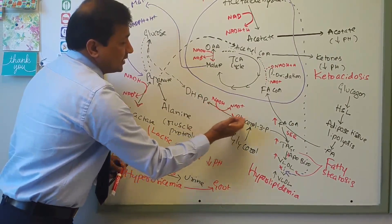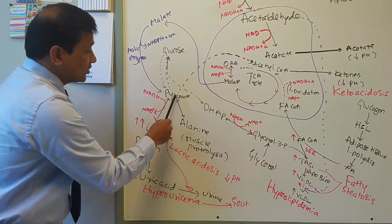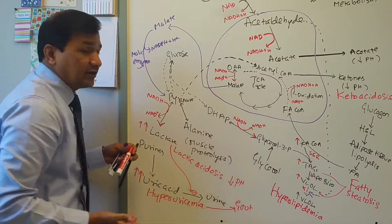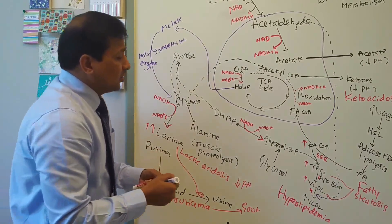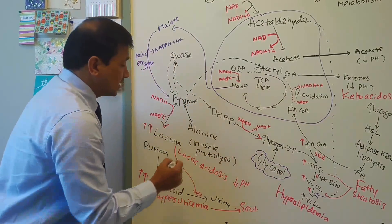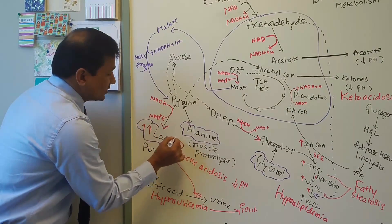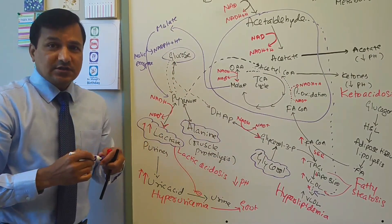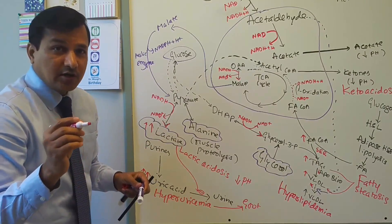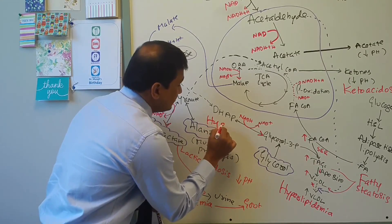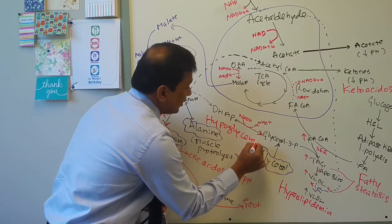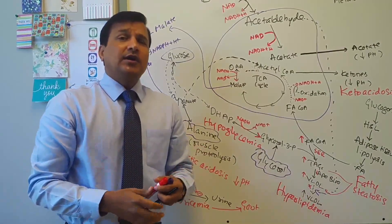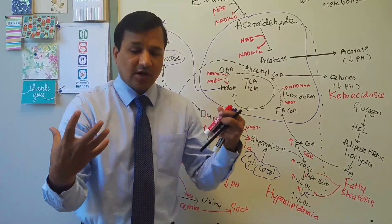Since glycerol 3-phosphate goes into esterification rather than gluconeogenesis, alanine-derived pyruvate is diverted into lactate rather than glucose, and lactate itself is not converted back to pyruvate — all three gluconeogenic precursors (glycerol, alanine, and lactate) are not entering glucose synthesis. Therefore, under fasting conditions, chronic alcoholics will develop hypoglycemia, which is a frequent laboratory finding in chronic alcoholism.